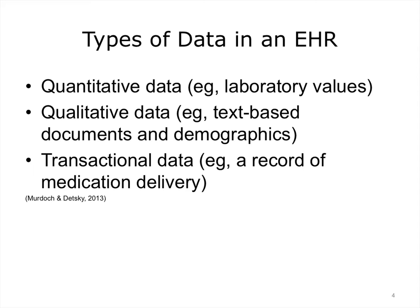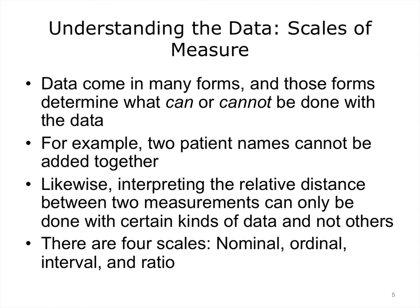We can also look at data in another way, as shown on the next few slides. Data come in many forms, and those forms determine what can and cannot be done with the data. For example, two patient names cannot be added together. However, it can be very important to graph a child's height over time, or to compare a patient's kidney function tests against their medications. The forms that data can be categorized into are referred to as scales of measure, and there are four scales: nominal, ordinal, interval, and ratio.